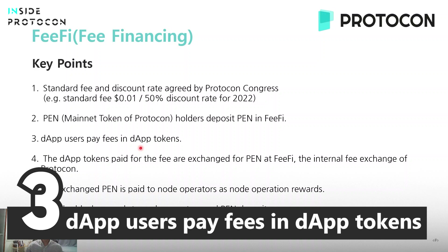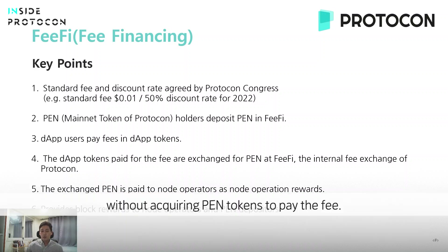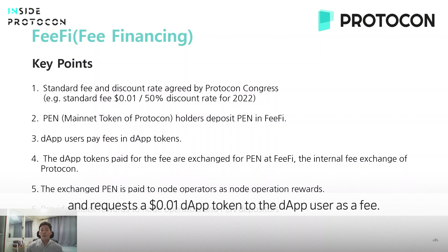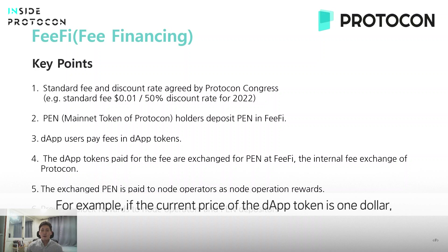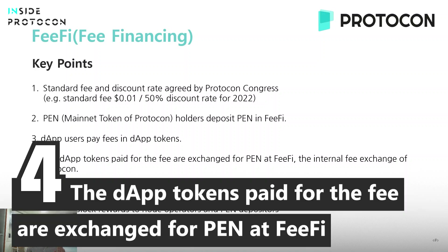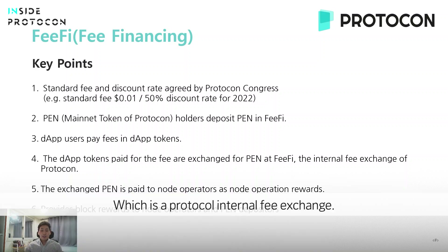Third, dApp users pay fees in dApp tokens without acquiring pen tokens. At this point, the system refers to external pricing data like an Oracle and requests 0.01 dApp tokens from dApp users as a fee. For example, if the current price of a dApp token is $1, paying an additional 0.01 dApp tokens would be considered the fee. Those paid dApp tokens are then exchanged to pen in fee-fi, which is a protocol-internal fee exchange.